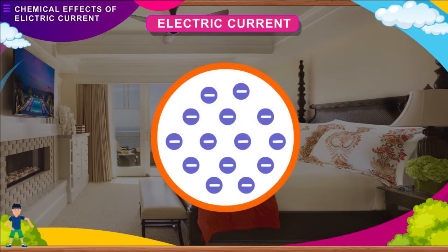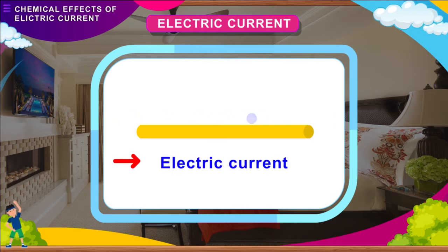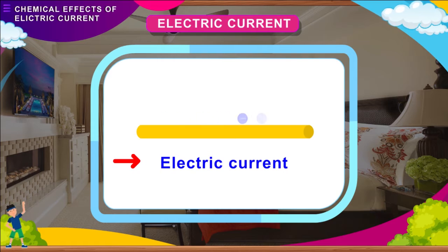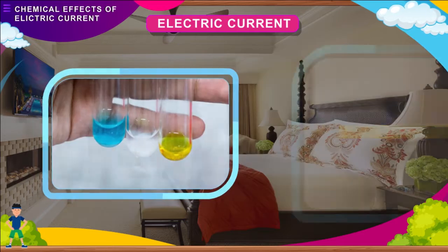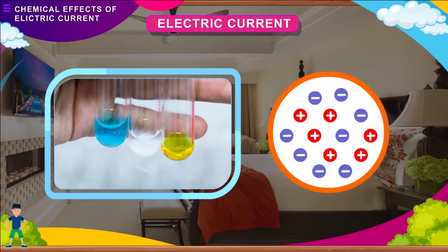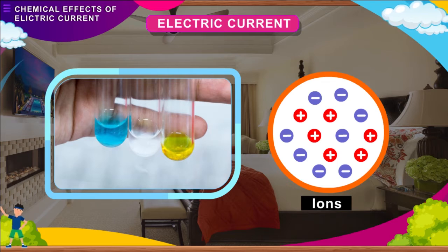Electric charge can be made to move in a continuous stream or current. The flow of electrons in a material is known as an electric current. For electricity to flow, we need freely moving electric charges. For solid conductors, the moving charges are electrons. In liquids, the moving charges are called ions — atoms or groups of atoms with a positive or negative charge — and these ions make it possible for electric current to flow.